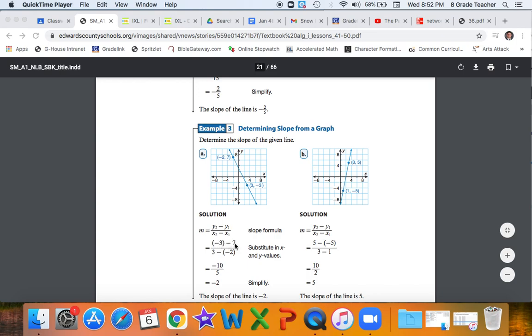Just like so, and then do your subtraction. Negative 3 minus 7, same sign sum, negative 10, 3 minus negative 2 is 5, you reduce that to be negative 2.